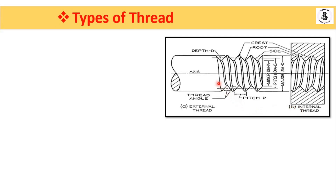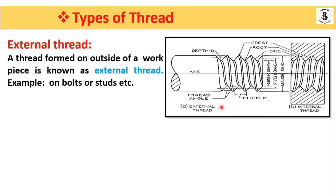There are different terminologies we will discuss in detail. An external thread is a thread formed on the outside of a workpiece. As discussed, it is found on screws, bolts, or studs. Bolts and studs with external threads are used as fasteners for joining two components in an assembly.